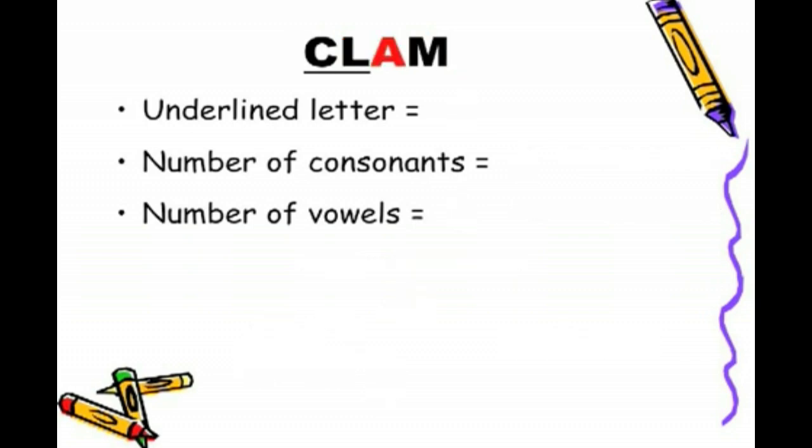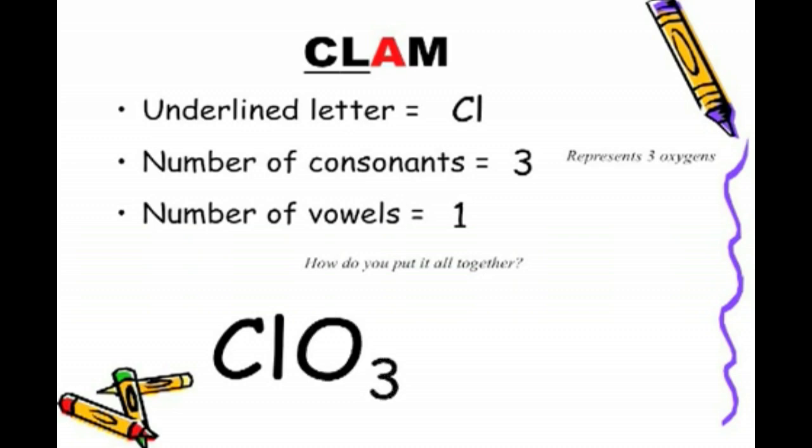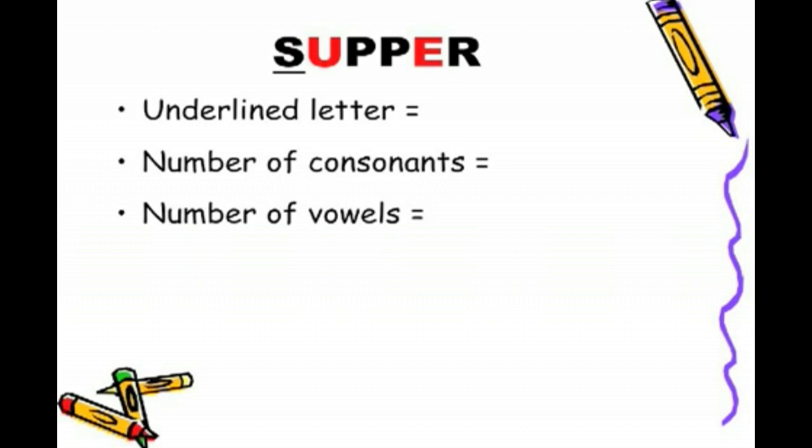Next example, clam. Underlying letter, or should we say letters, CL. Number of consonants, three. Number of vowels, one. So, how do we put it all together? CL. There are three consonants, so three oxygens. Number of vowels, there's one. So, one negative charge, so negative one. So, what element are we making reference to? We're making reference to the chlorine, but because it's a polyatomic and it has oxygen present, we call it chlorate.